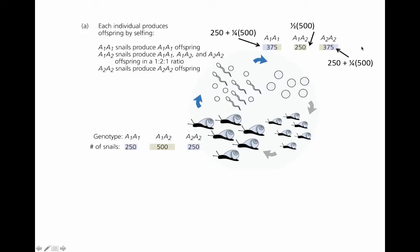And then again, just like the A1A1 homozygotes, the A2A2 homozygotes are going to be these 250 that are producing only A2A2 homozygotes plus one quarter of your 500 heterozygotes to get, in the next population of 1,000 snails, 375 of each of the homozygotes and only 250 of the heterozygotes.